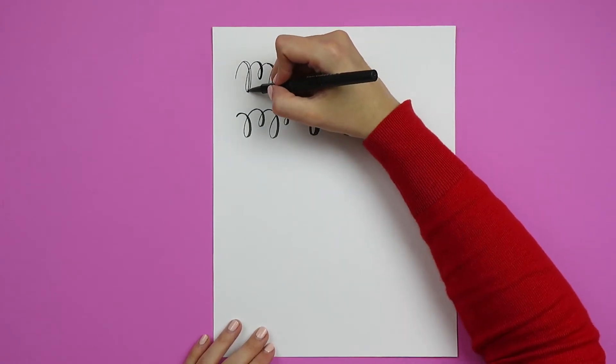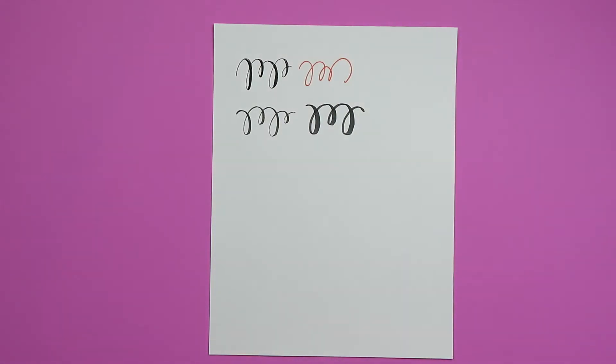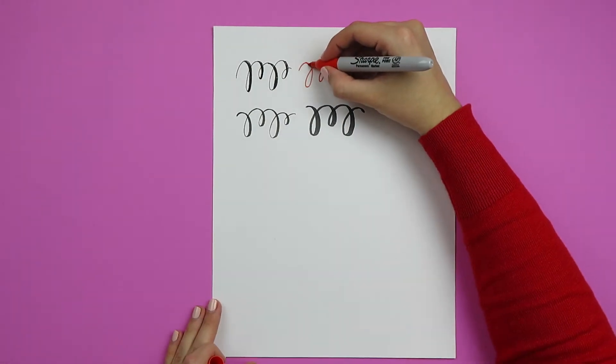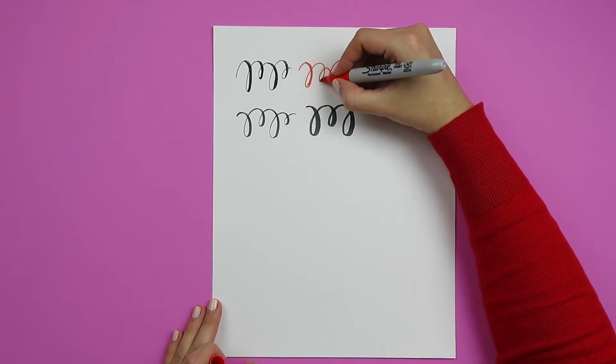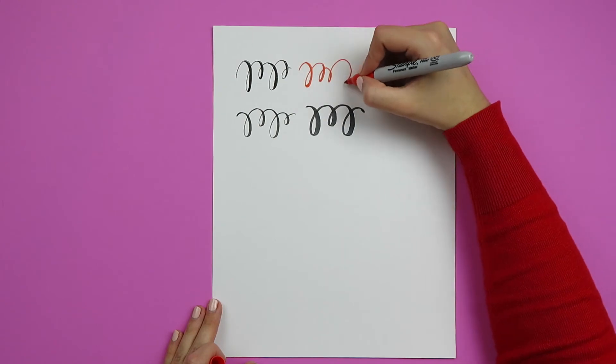And then once you kind of get that practice down and are more aware of where your down strokes are supposed to go, you can invest in those fancier brush pens. And you can do the same with a Sharpie and you can just kind of go over those down strokes, thicken them up, and then you have virtually the same thing.